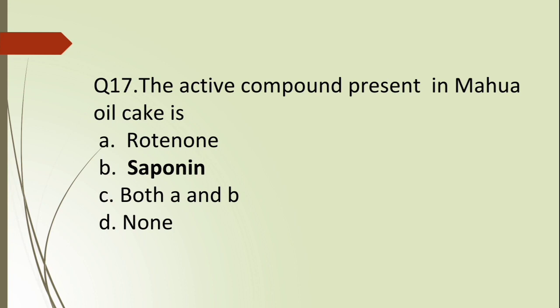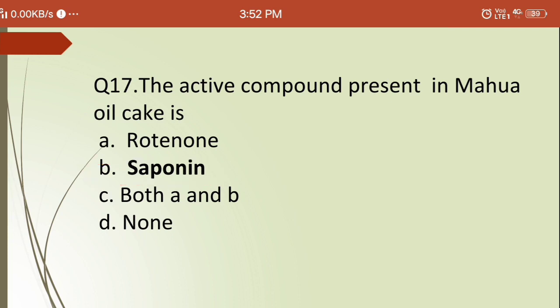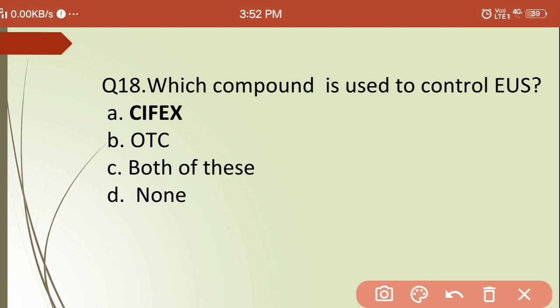Seventeenth question: the active compound present in mahua oil cake is? Options are: (a) rotenone, (b) saponin, (c) both, (d) none. The answer is (b) saponin — saponin is the active compound present in mahua oil cake, which is very useful for killing weed fishes.